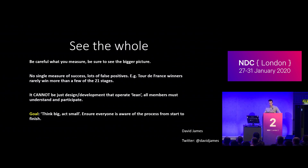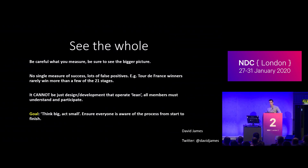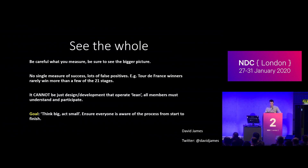The last principle is see the whole. This is more about not micro-optimising and micro-managing processes — which might seem ironic given the six previous principles. As a concrete example, the Tour de France winner will rarely win more than one or two stages. If they try to optimise to win all the stages, they'll probably never win the Tour de France due to fatigue. If you focus only on the individual stages, you're unlikely to identify the overall winner. In my opinion, this is easier to do if you step back regularly, do retrospectives in the agile sense, and try to refocus people on your purpose. I quite like the phrase: think big, act small — I think it summarises this quite well.